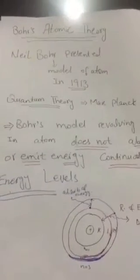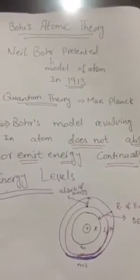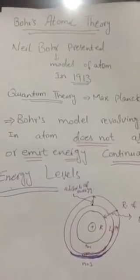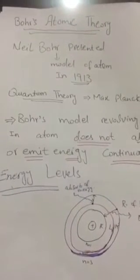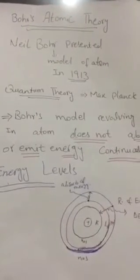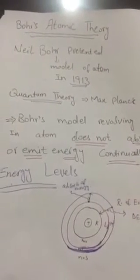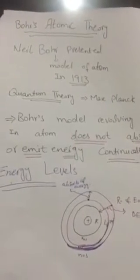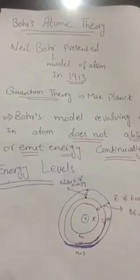Rutherford is saying that we have electrons in atoms which revolve continuously and emit energy. When they emit this energy, at the end they will fall into the nucleus, which we discussed in class.